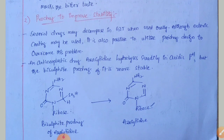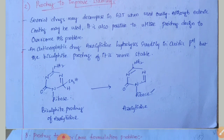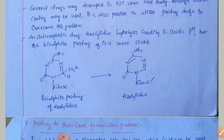Prodrug to improve stability: several drugs may decompose in the GIT when used orally. Although enteric coating may be used, it is also possible to utilize prodrug design to overcome this problem. An antineoplastic drug, azocytidine, hydrolyzes readily in acidic pH, but the bisulphite prodrug of azocytidine is more stable. After crossing the acidic pH of the stomach, the drug can be activated into azocytidine.